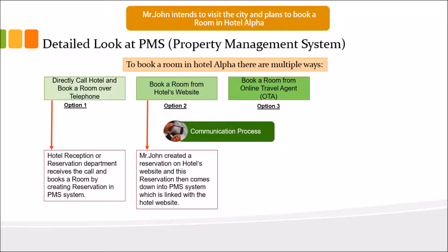Examples of OTAs include booking.com, gta.com, and Gulliver Travels. Booking.com does not have physical offices — it is a website linked with different hotels, displaying options so guests can compare hotel facilities, rates, locality, and other preferences. When you visit a website like booking.com, Mr. John can choose a hotel and create a reservation.